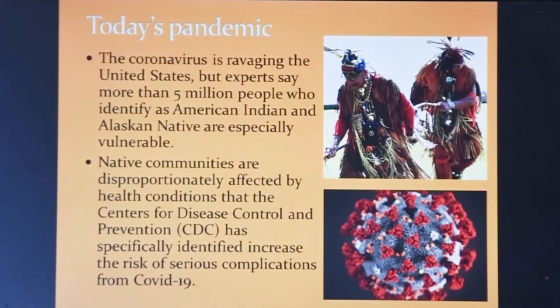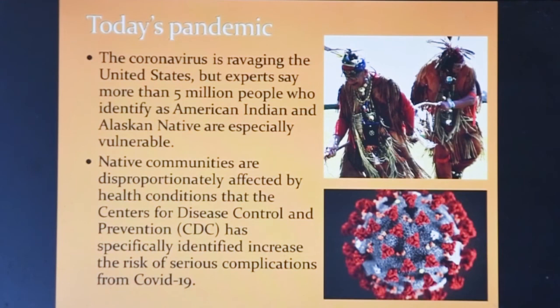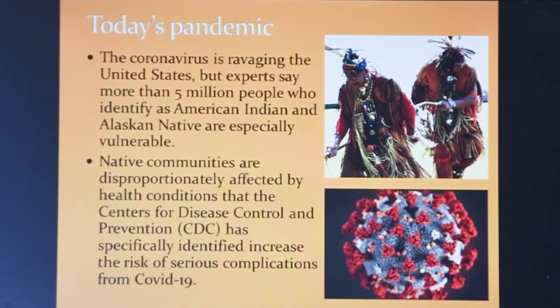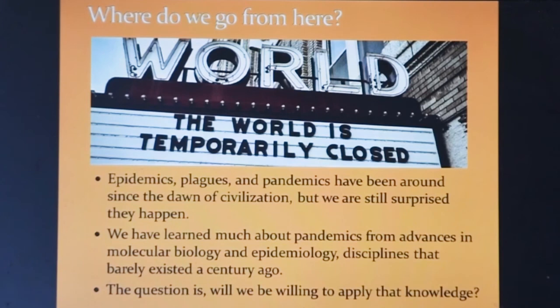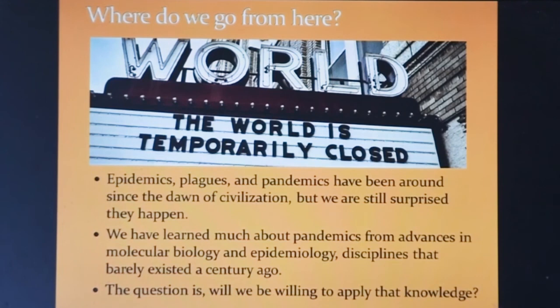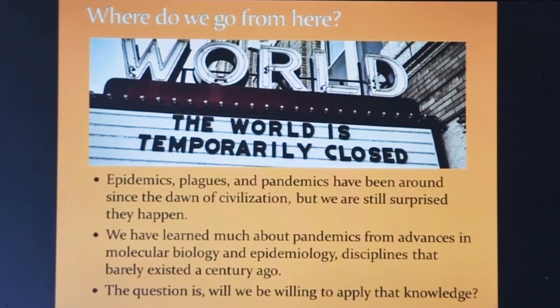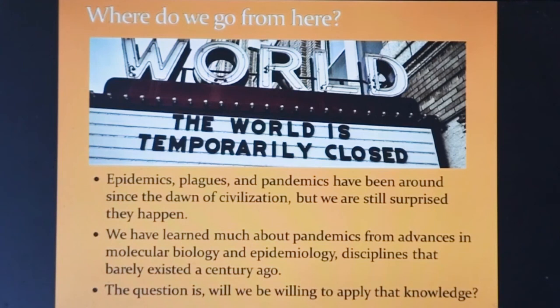The coronavirus has raged through the United States, but the 5 million American Indians and Alaskan Natives have been especially vulnerable. In this way, we see that history is indeed repeating itself. Though epidemics, plagues, and pandemics have been around since the dawn of civilization, we are still surprised when they happen. Though we have learned much about pandemics from advances in science, the question is: will we be willing to apply that knowledge to better control future outbreaks? Only time will tell.